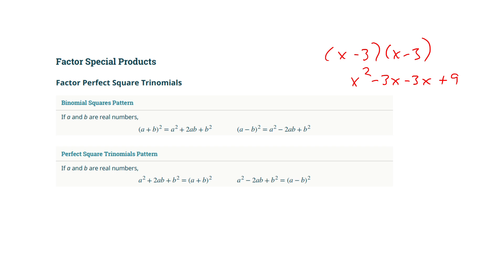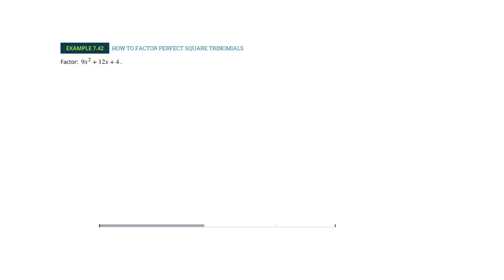If you look at this page, this doesn't mean anything to you yet, let me show you what it means. Here's my special pattern. I'm always going to first check if there's a GCF. For this next few I don't think we're going to have any. I'm going to check for square roots on the front term and square roots on the back term. The square root of 9x² is 3x, and the square root of 4 is 2.